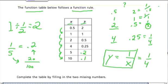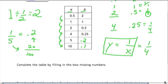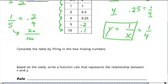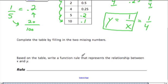And so now, I've completed the values of my table, and they ask us actually to write a function rule that represents the relationship between x and y. A function rule is an equation that relates y and x. So I would write y equals 1 over x.